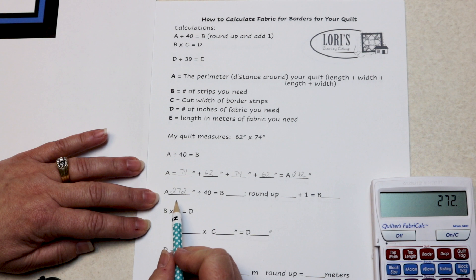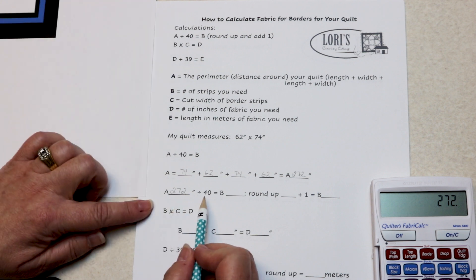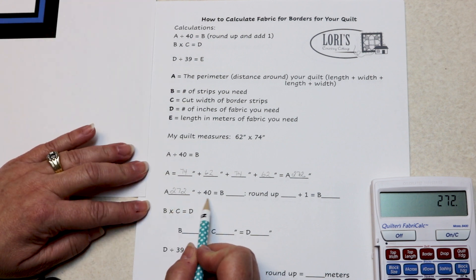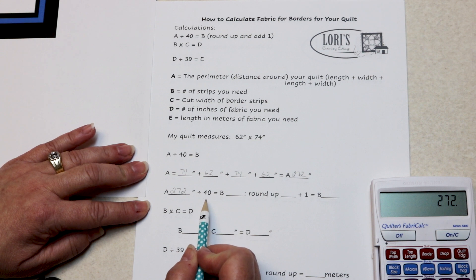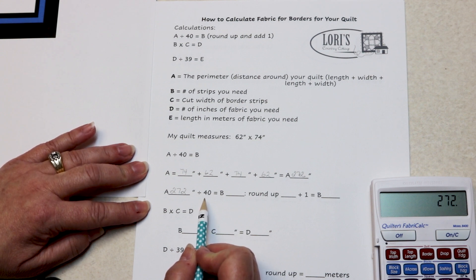Now I need to do the first calculation. A divided by 40 equals B. Why 40? Well, fabric is generally considered 45 inches wide, minus your selvages it's about 44 inches wide.